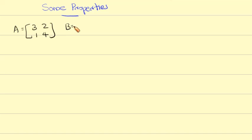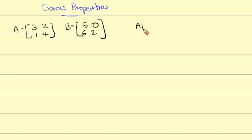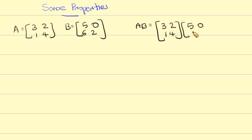Some properties about matrix multiplication. Let's say capital A equals 3, 2, 1, 4. And capital B equals 5, 0, 6, 2.